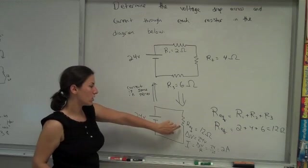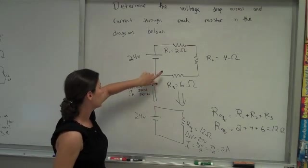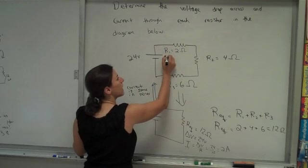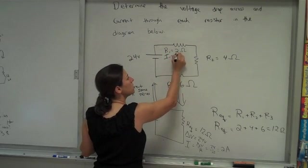So since we solved for the current here, and that's the current through the battery, 2 amps, that 2 amps is just the same throughout the whole circuit. So I can say I1, the current through this, is 2 amps.